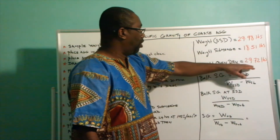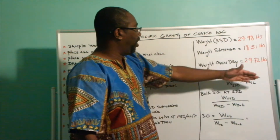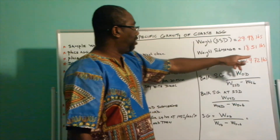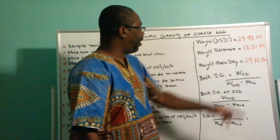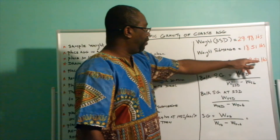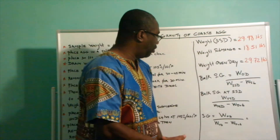So these are all the values: saturated surface dry weight is 29.98 pounds, submerged weight is 18.51 pounds, and oven dry weight is 29.72 pounds.